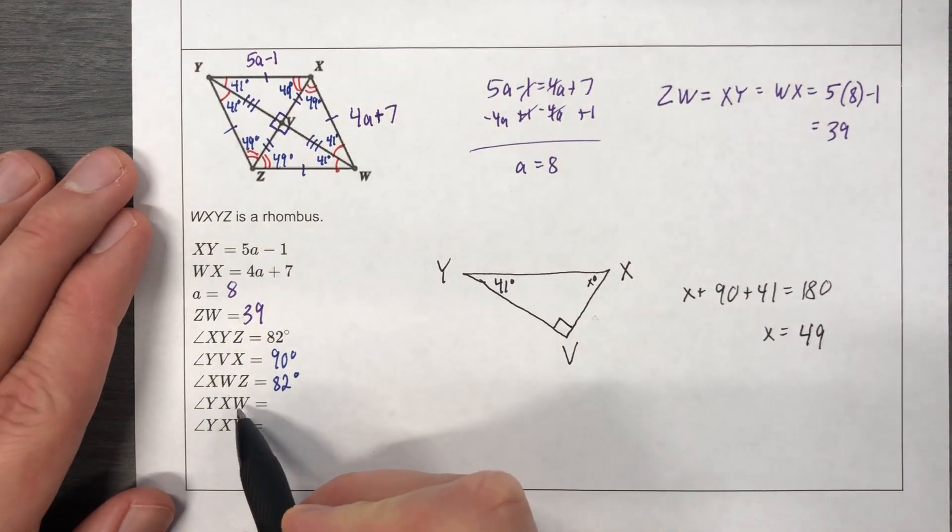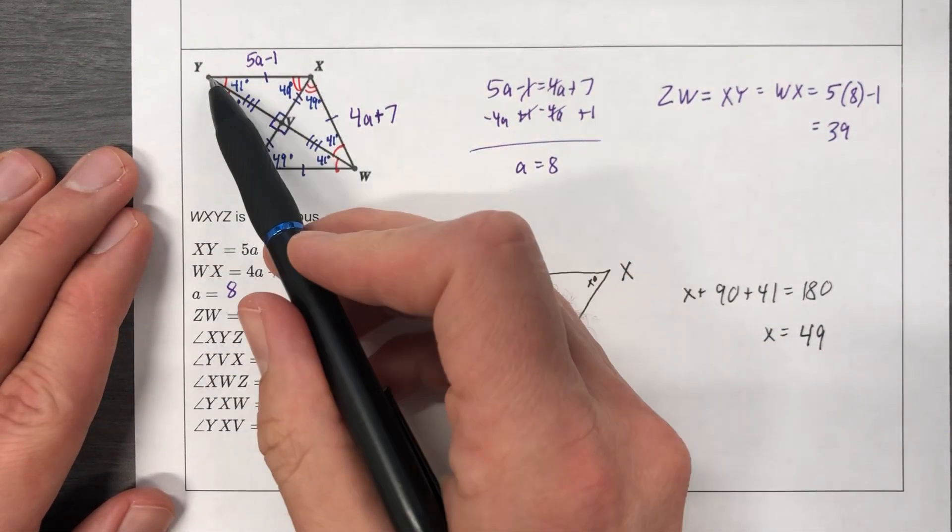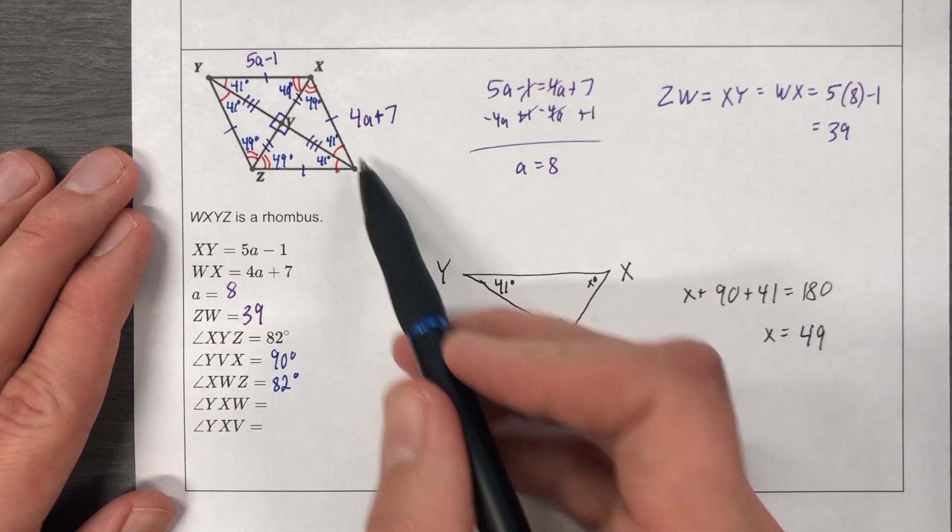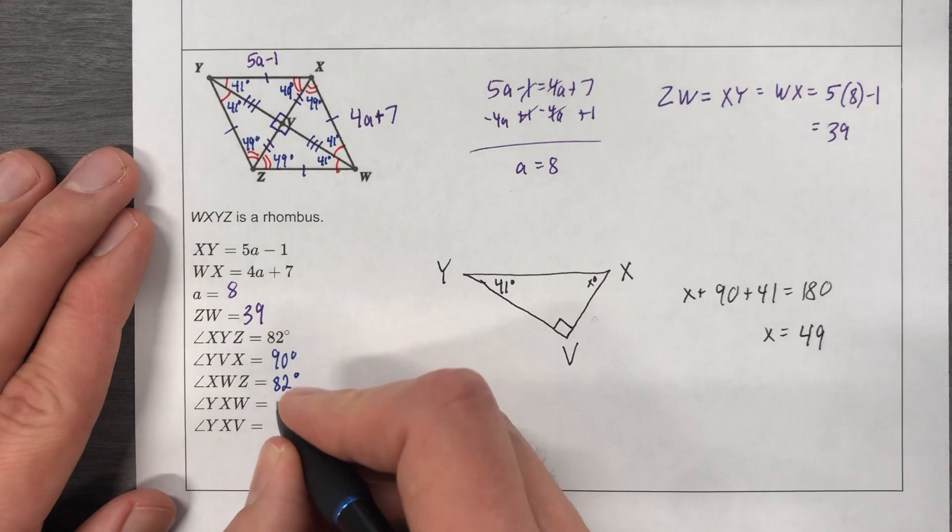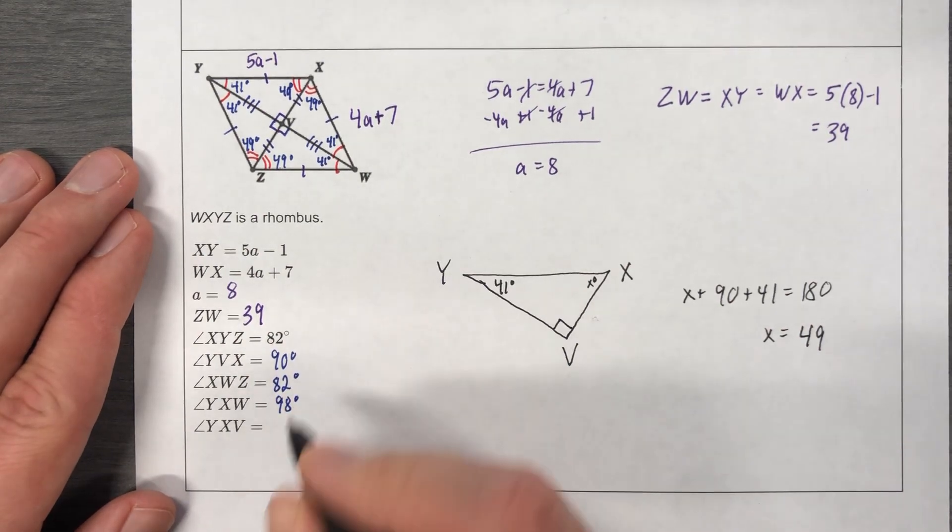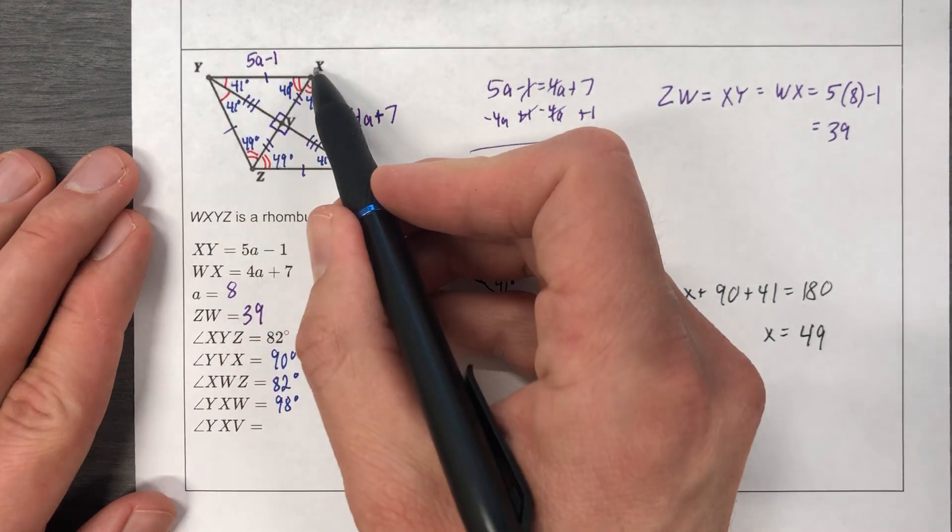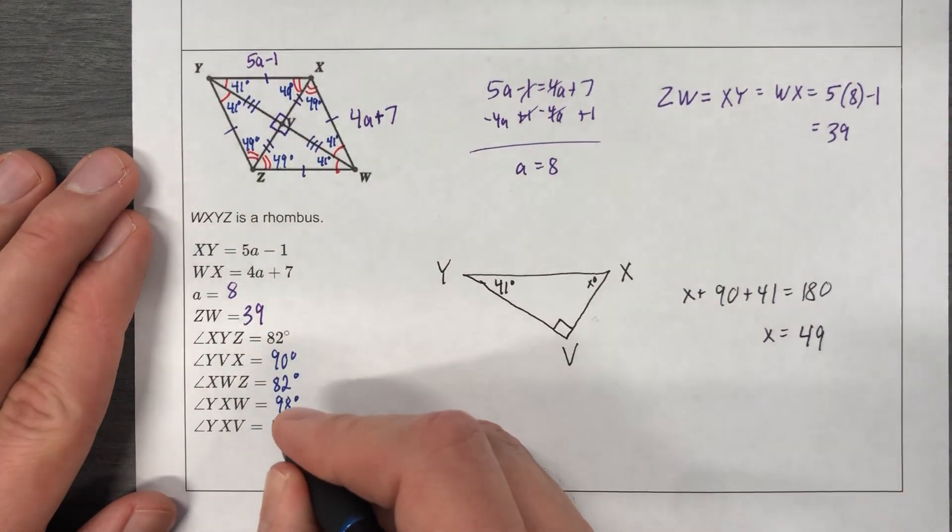Y, X, V. Y, X, V. Well, 49 and 49, 98. Y, X, V, Y, X, V, 49.